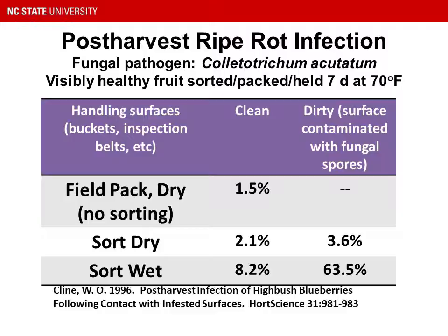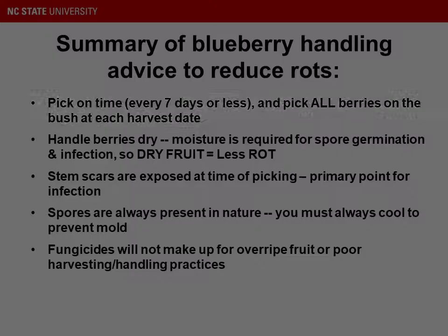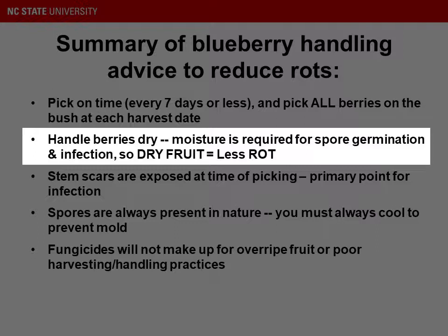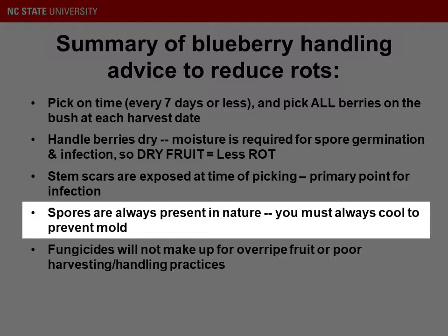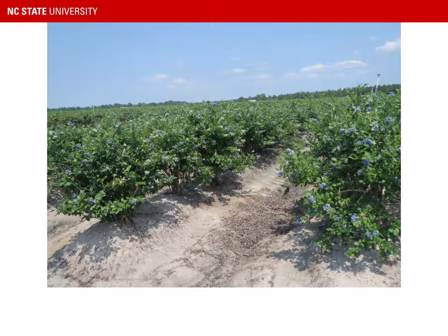To summarize advice on handling blueberries to reduce rots: pick on time every seven days or less and pick all the ripe berries on the bush at each harvest date, so there's no overripe fruit remaining. Handle berries dry — moisture is required for spore germination and infection, so dry fruit equals less rot. Stem scars are exposed at the time of picking and this is a primary point for infection. Spores are always present in nature, so you must always cool the berries to prevent mold. Finally, fungicides will not make up for overripe fruit or poor handling practices. Thank you for your attention — I hope this has been useful for you. If you have any follow-up questions, please let me know and we'll try to get them answered.